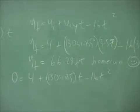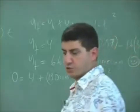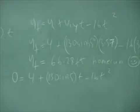Just put the coefficient of the T squared is going to be negative 16. The coefficient of the T is 130 sine of 35. And the last coefficient is four. See what it comes up with, the answer.